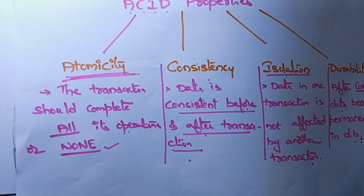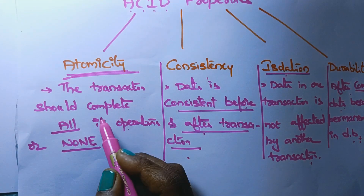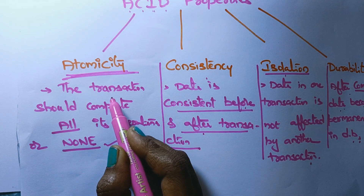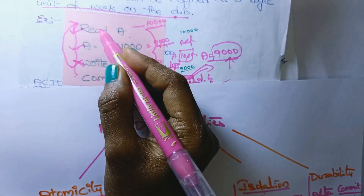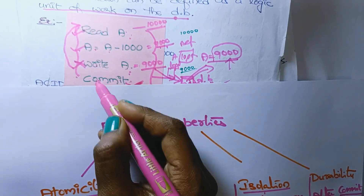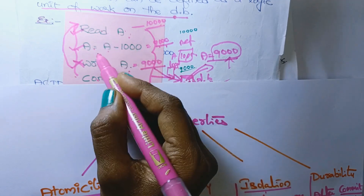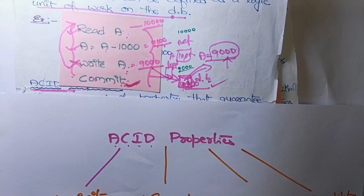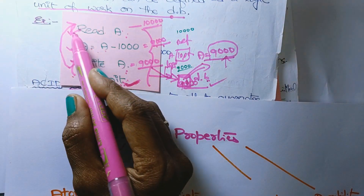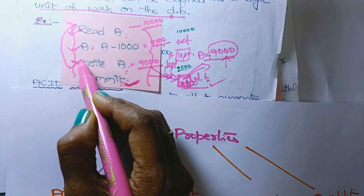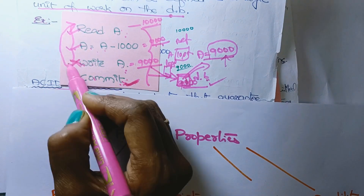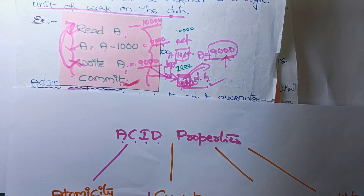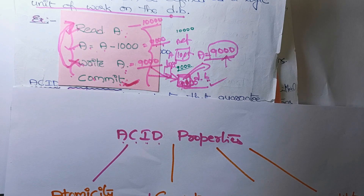First we will see Atomicity. After the transaction, the transaction should either complete all its operations or none. Whatever operations are there in the transaction, it should complete all or none — that is atomicity. If any failure occurs after the completion of some operations, it should be rolled back, which means whatever changes were made in the database will be undone.